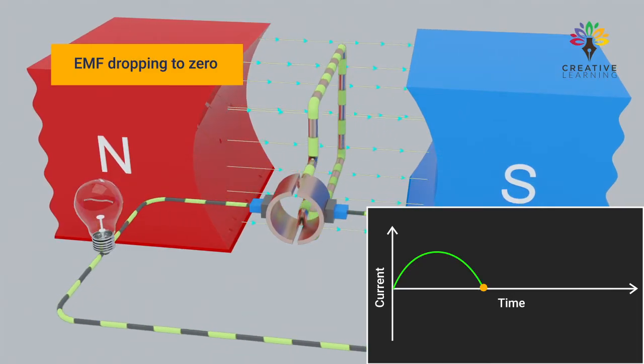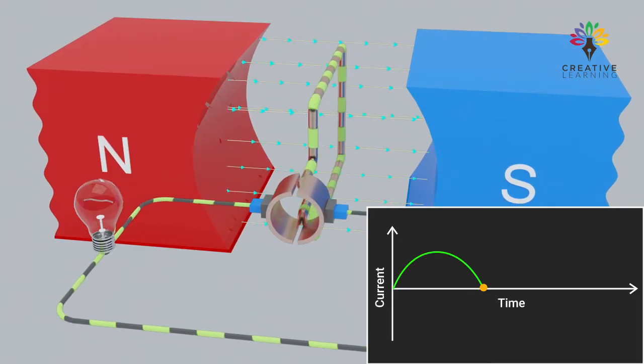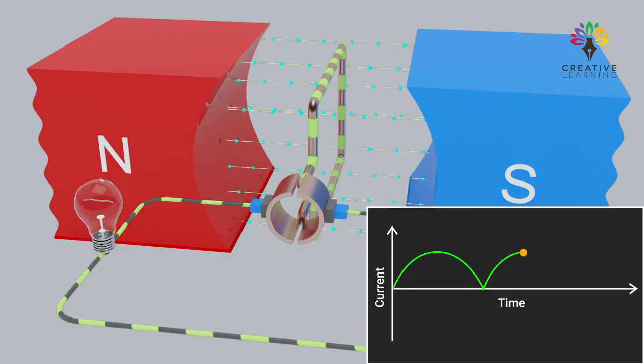At this point, the commutator segments switch the connection of the brushes, ensuring that the current flows in one direction.